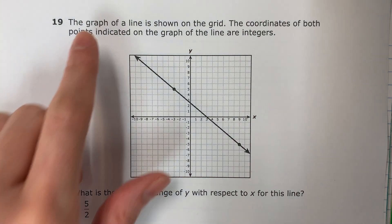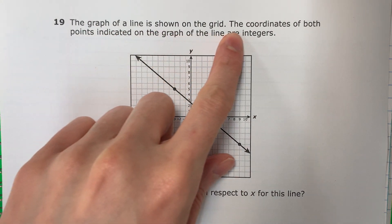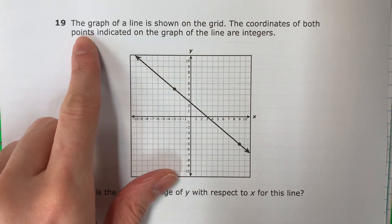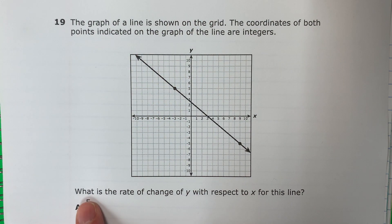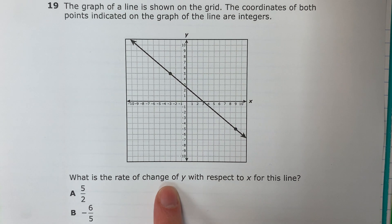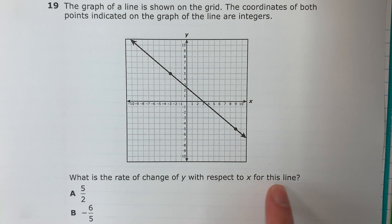Question 19. The graph of a line is shown on the grid. The coordinates of both points indicated on the graph of the line are integers. What is the rate of change of y with respect to x for this line?